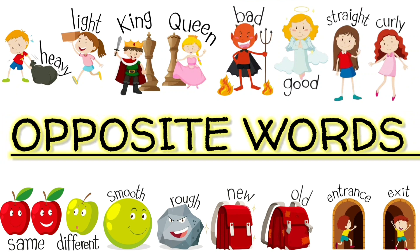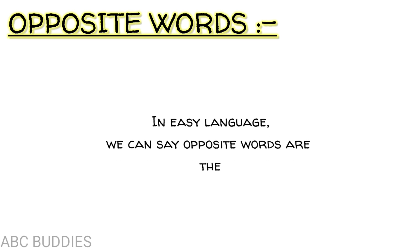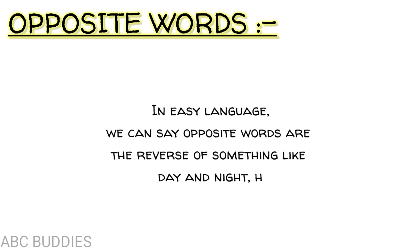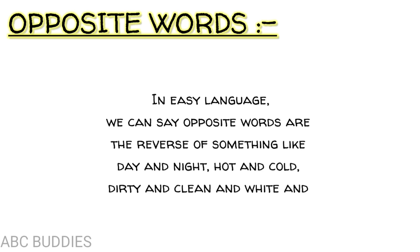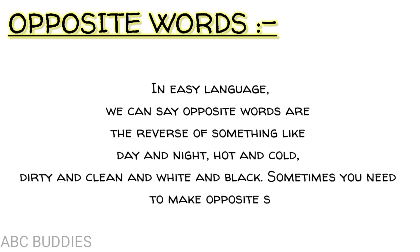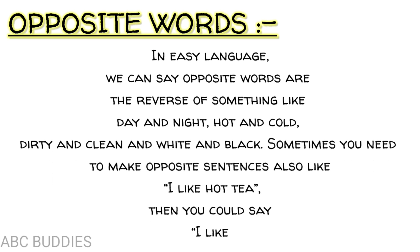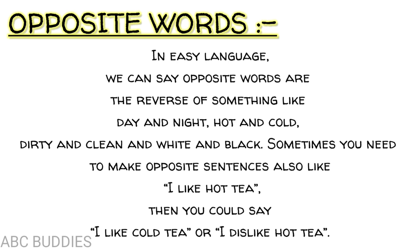Opposite words — in easy language we can say opposite words are the reverse of something, like day and night, hot and cold, dirty and clean, white and black. Sometimes you need to make opposite sentences also, like 'I like hot tea,' then you could say 'I like cold tea' or 'I dislike hot tea.'